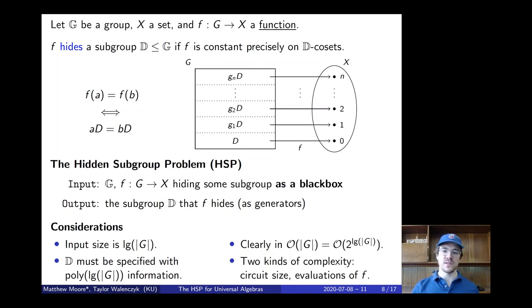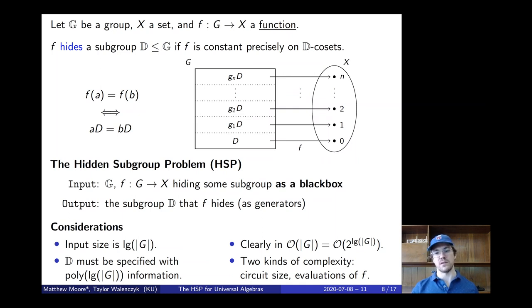There are two kinds of complexity we might consider for the hidden subgroup problem. The first is circuit size — the size of the circuit which actually solves it. The second is how many evaluations of the function f are required, which is the so-called query complexity.